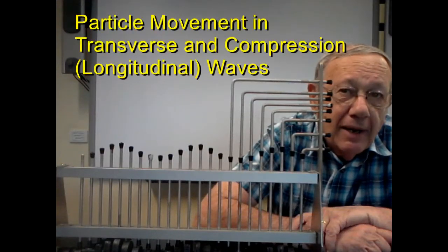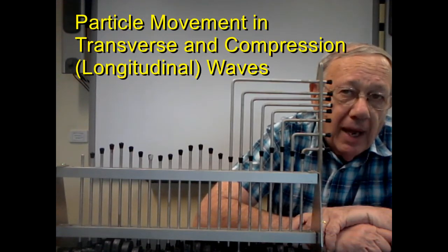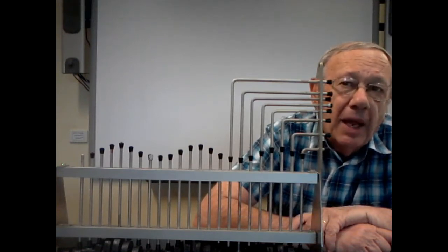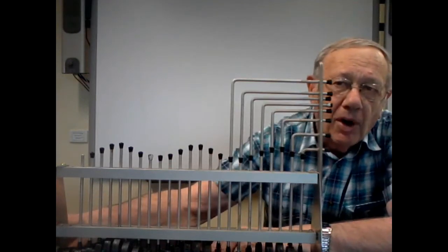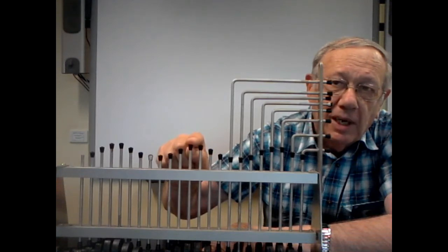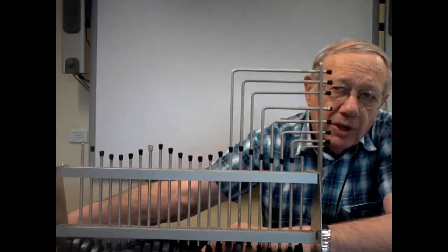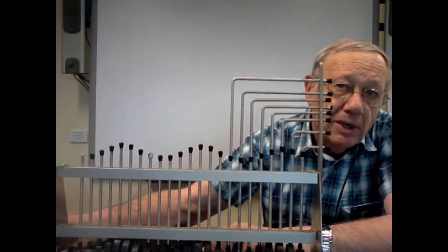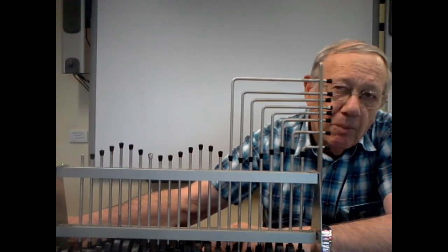I have here what we can call a wave machine, and what it does is create transverse waves and compression waves. It lets us have a look at the direction in which the particles move and the direction in which the wave moves. I'm going to begin by turning this handle, and I want you to have a look at the crest of the transverse wave. Is each individual dark particle moving up and down, or is it moving backwards and forwards?